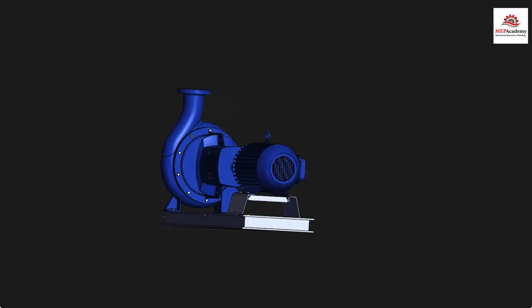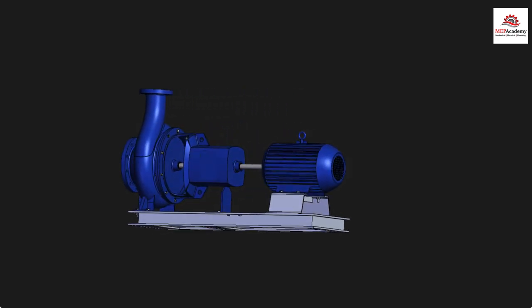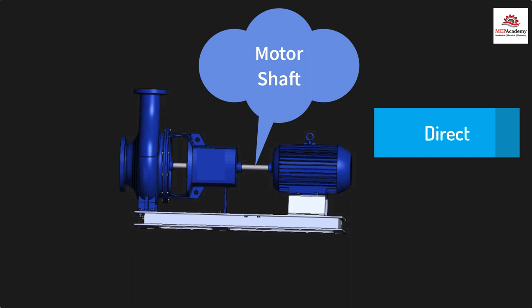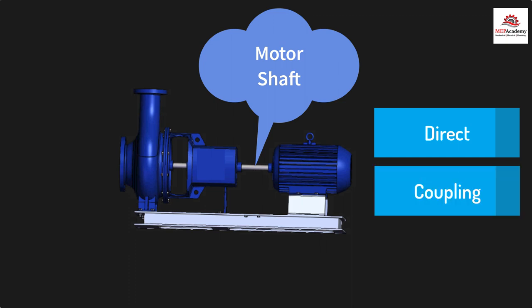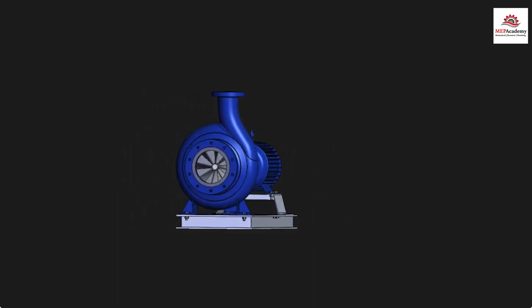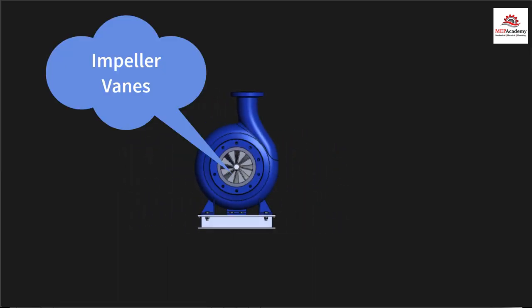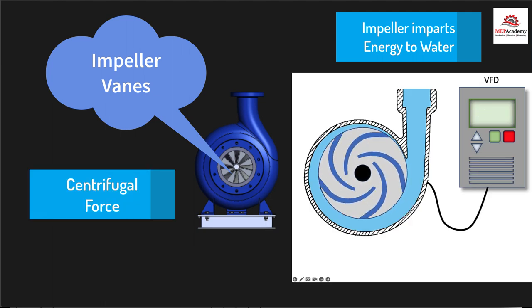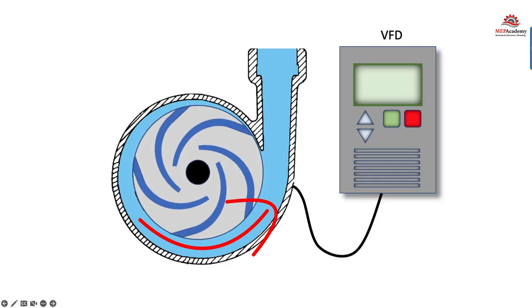The motor has a shaft that extends into the pump portion where it attaches to the impeller. This can be a direct connection or by a coupling. The impeller is made up of veins that rotate to impart energy to the water.